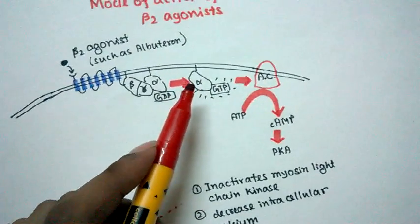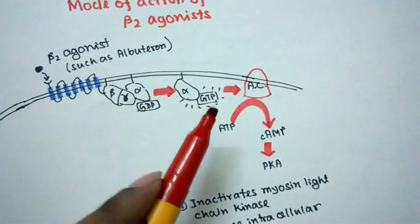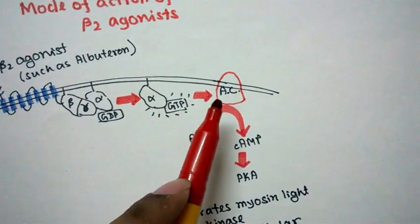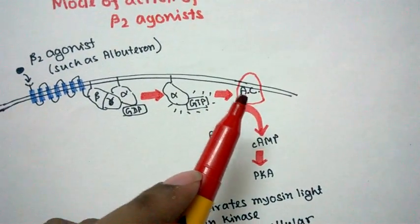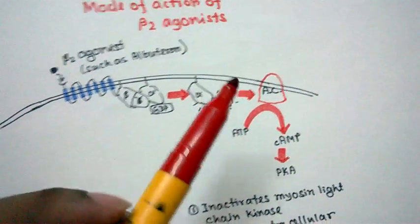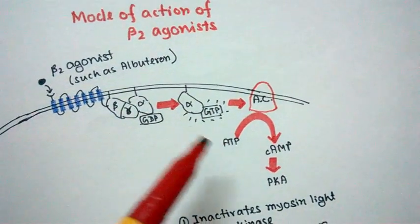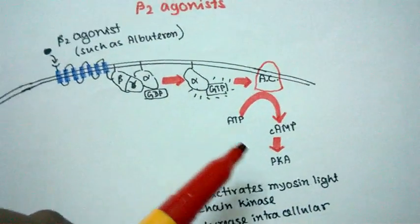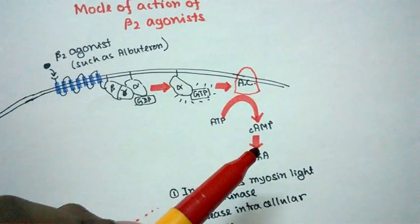Now the alpha subunit bound with GTP is active, and this activated alpha subunit activates adenylate cyclase, as we have seen in the basic mechanism of any G protein signaling cascade. Then the second messenger, cyclic AMP, is generated from ATP. The basic mechanism is the same.